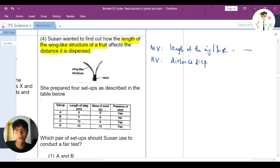What are you saying? Now basically means that I want to see how the length affects the distance dispersed, right? Manipulated variable MV here basically means the one that can be changed. The one can be changed because we need to change in order for our tests. This is the one that can change.